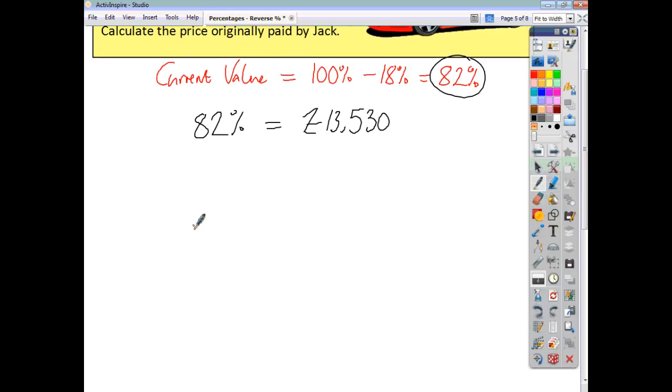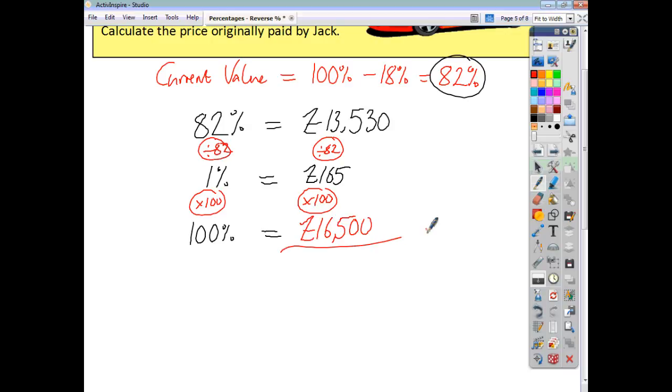Now we want to find 100%. And we do that by first finding 1%. Anything divided by itself gives us 1. What you do to one side, do the same to the other. 13,530 divided by 82, that would give us £165. Multiply both sides by 100 and we can scale things up to find 100%. And that's going to be £16,500.